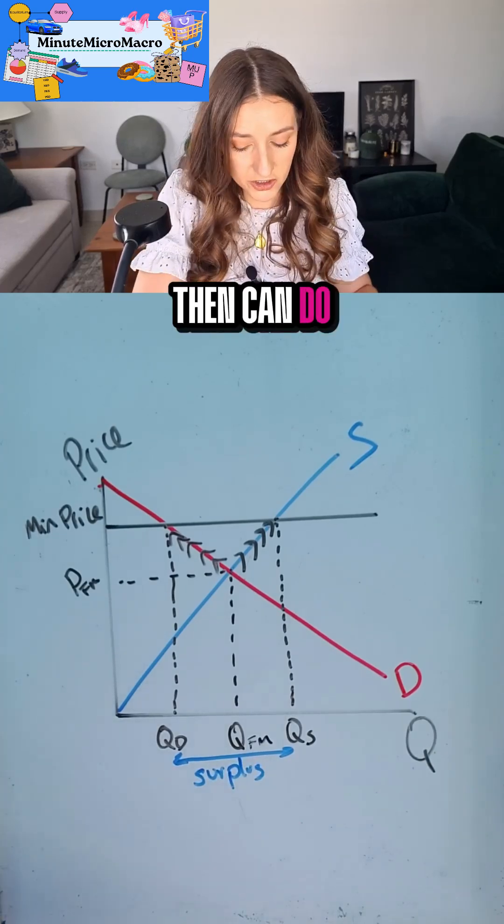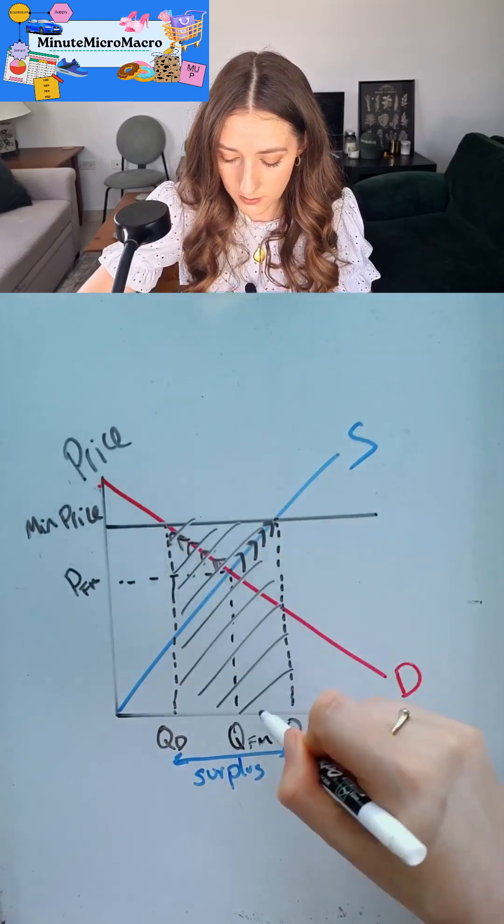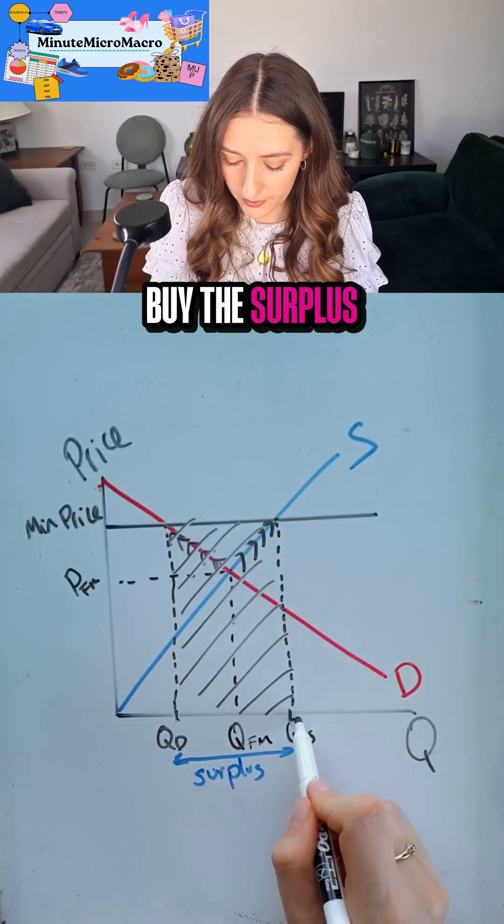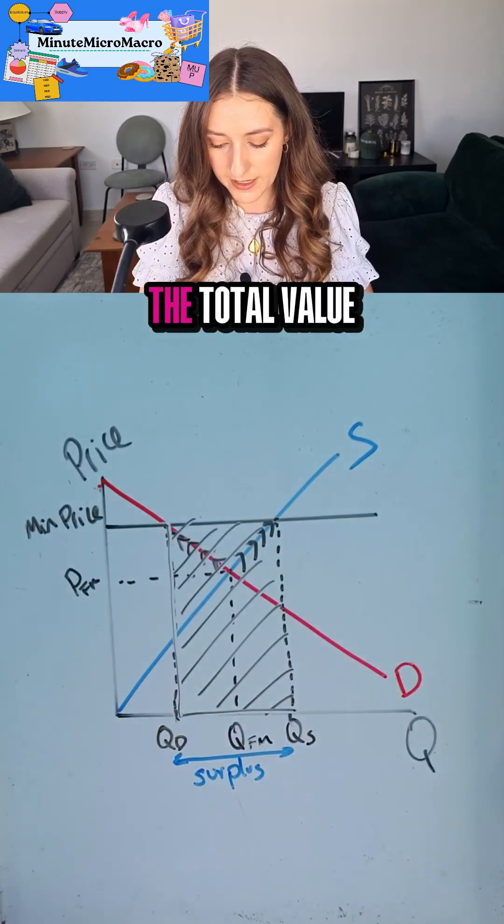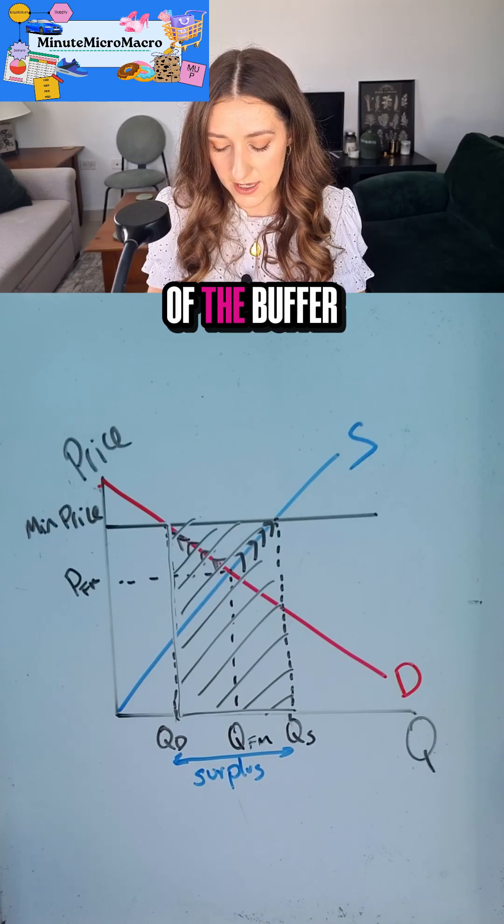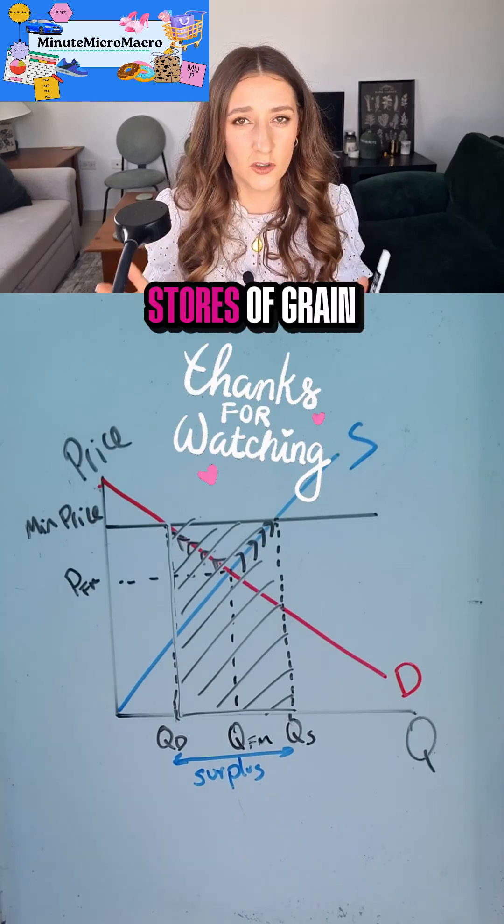What the government then can do is they can buy up this area. So they can buy the surplus multiplied by the price. And that gives us the total value of the buffer stock that the government is going to buy up. And you might have seen large stores of grain.